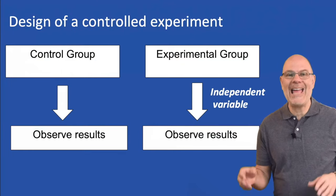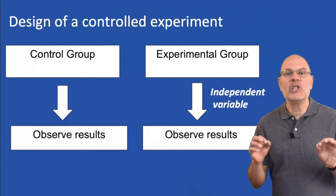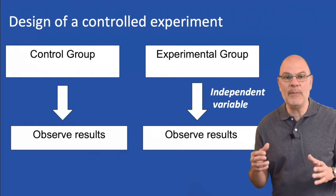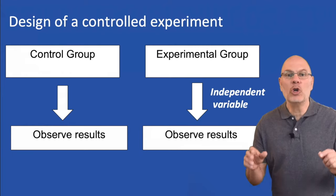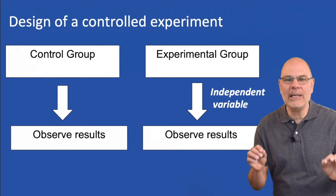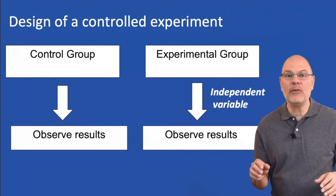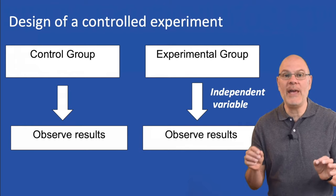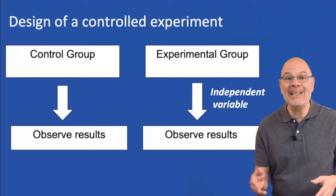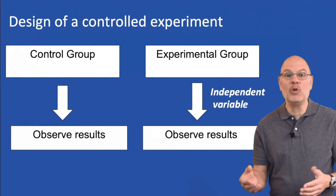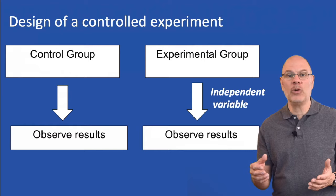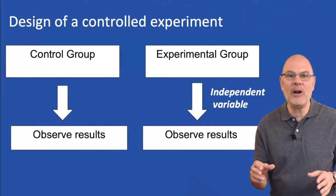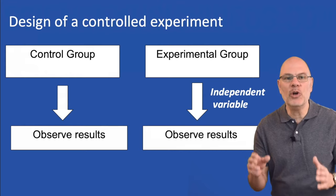There's a control group and an experimental group. The experimental group is the one where your experimental subjects are exposed to your independent variable. Except for one difference, your control group should be exactly the same as your experimental group. The only difference is that the control group doesn't include your independent variable. The purpose of your experiment is to see if there's a difference between the results in your control group and your experimental group. If there is, you have a correlation between the presence of the independent variable and some observed outcome.